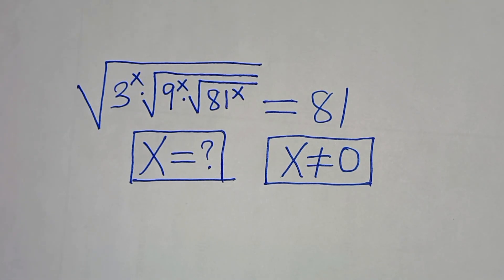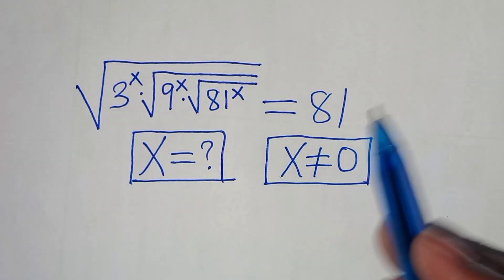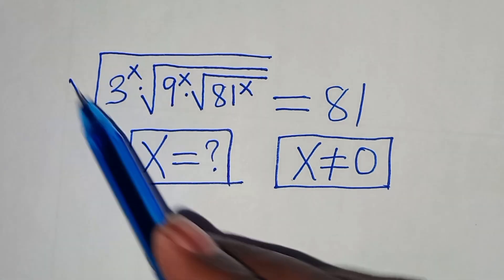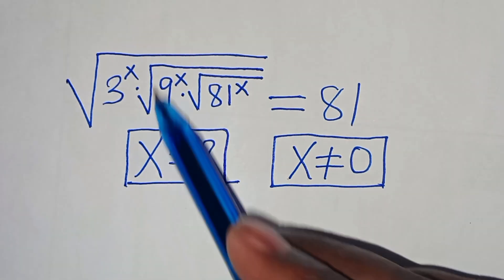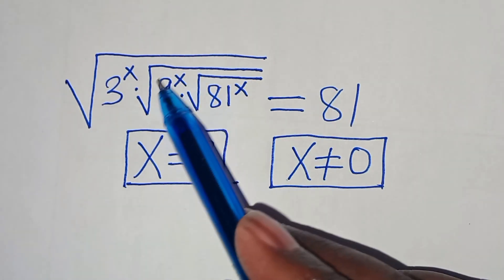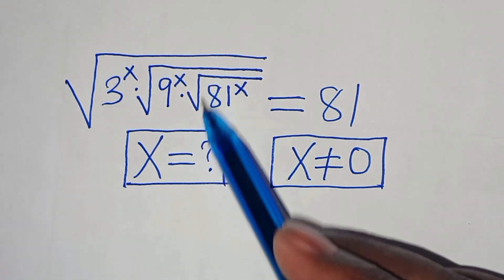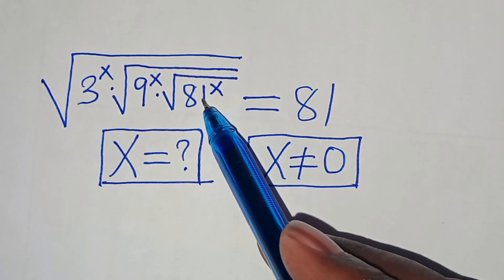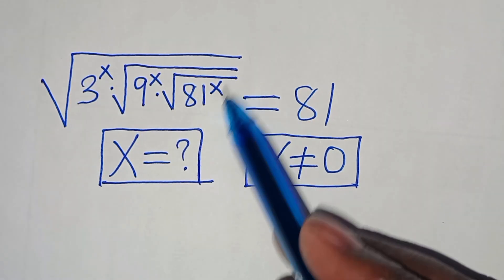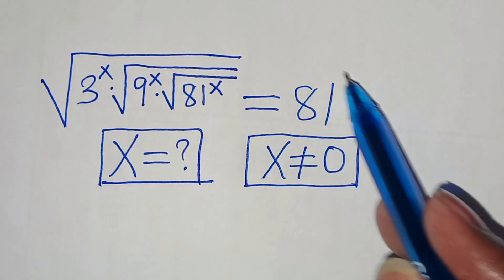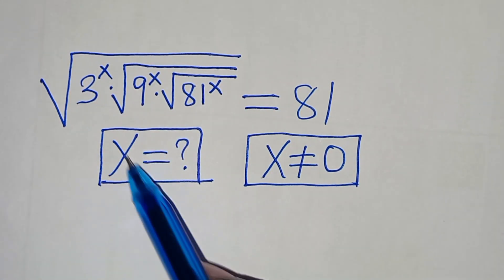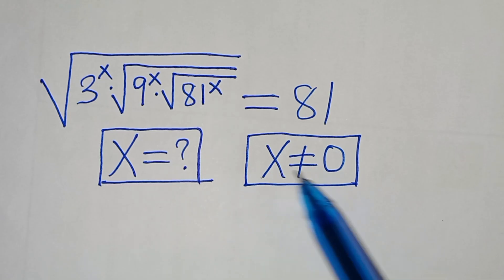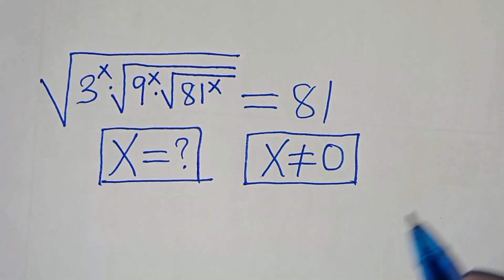Everyone, you are welcome to solve this nice square root math problem, which is the square root of 3 to the power of x, multiplied by the square root of 9 to the power of x, multiplied by the square root of 81 to the power of x. This is equal to 81. So what is the value of x, given that x is not equal to 0?